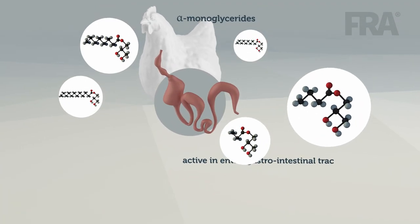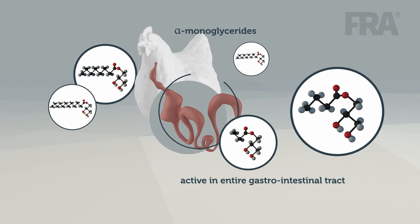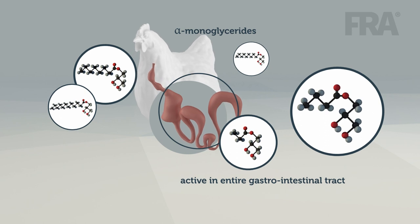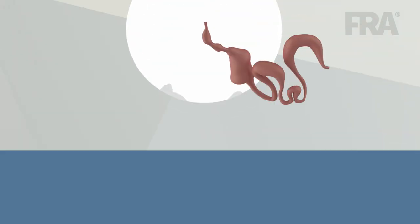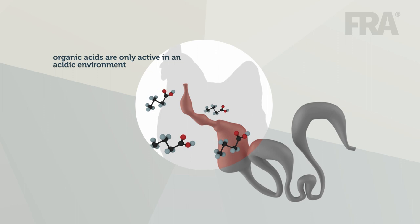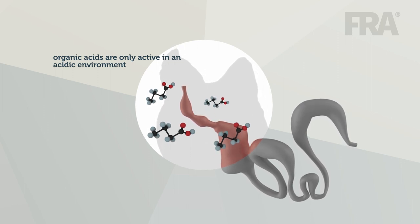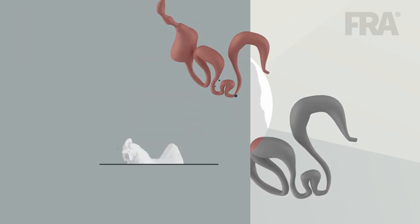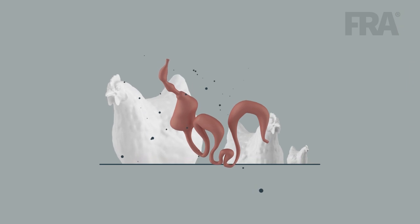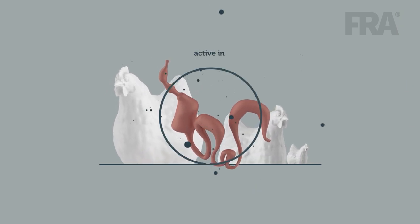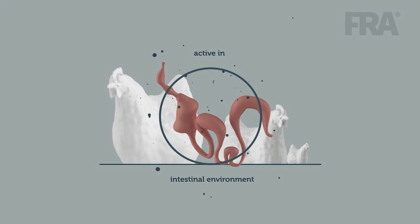Alpha-monoglycerides are pH-independent molecules, which makes them active in the entire gastrointestinal tract. In contrast, organic acids are only active in an acidic environment, meaning the first part of the digestive system. However, for optimal gut health and performance, it is important that these additives are also active in the intestinal environment.